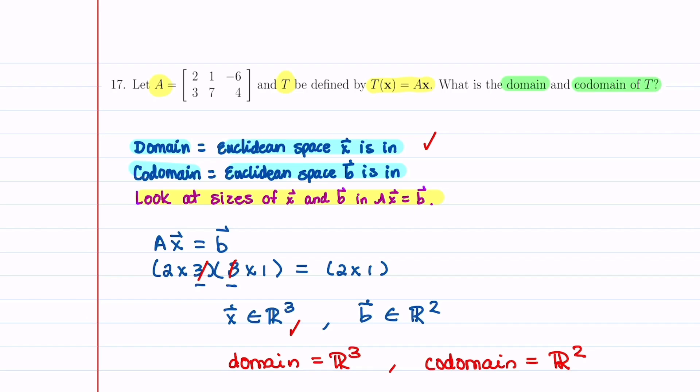So the key to this problem is starting with the equation A times X is equal to B and looking at the sizes of A, X, and B.